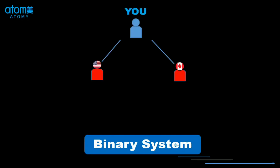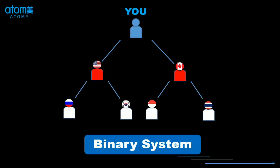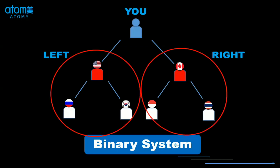Now, Anthony is a binary system. Let's say this one is you. Binary system means there are only two members directly under each member on the next level. As you can see on the screen, there are only two members. So if you have a third one joining, he or she has to go to the next level. And this is the left and right teams.